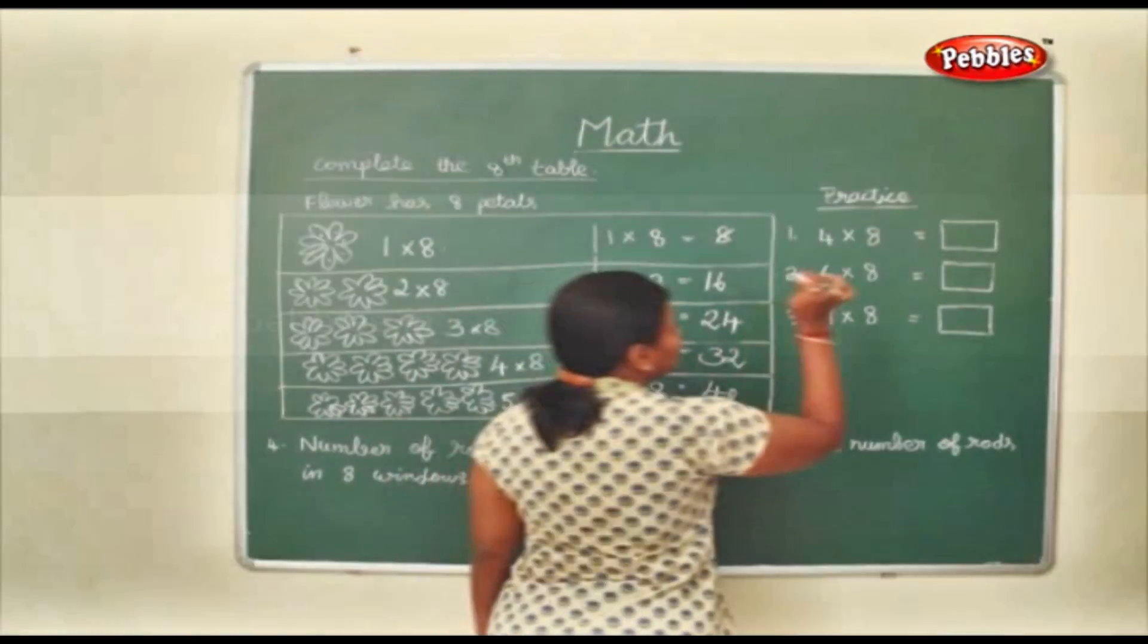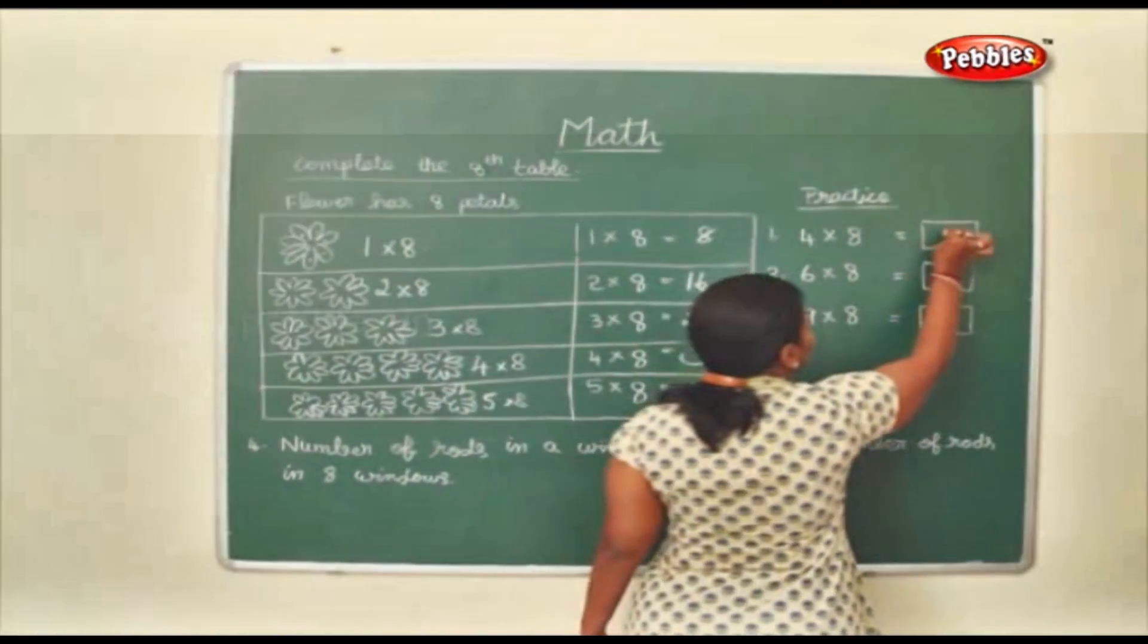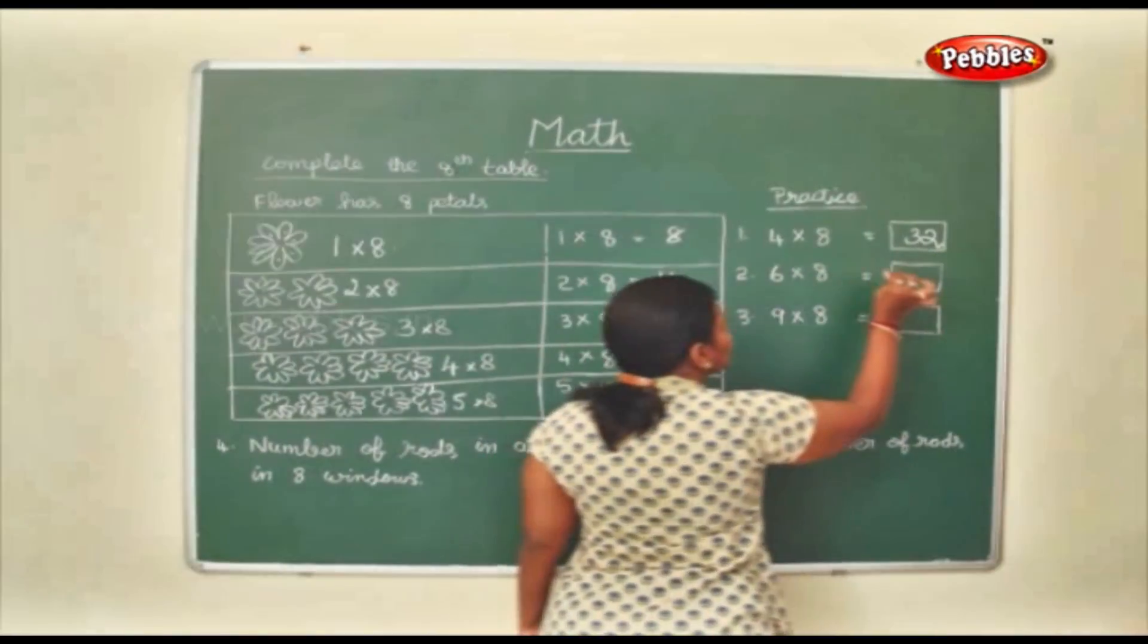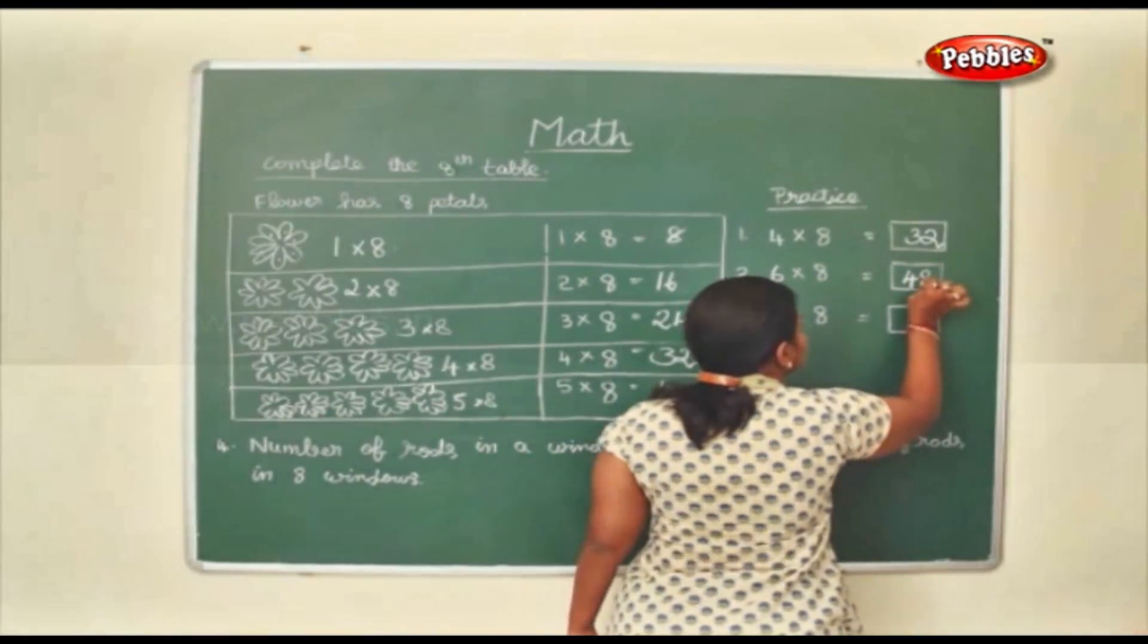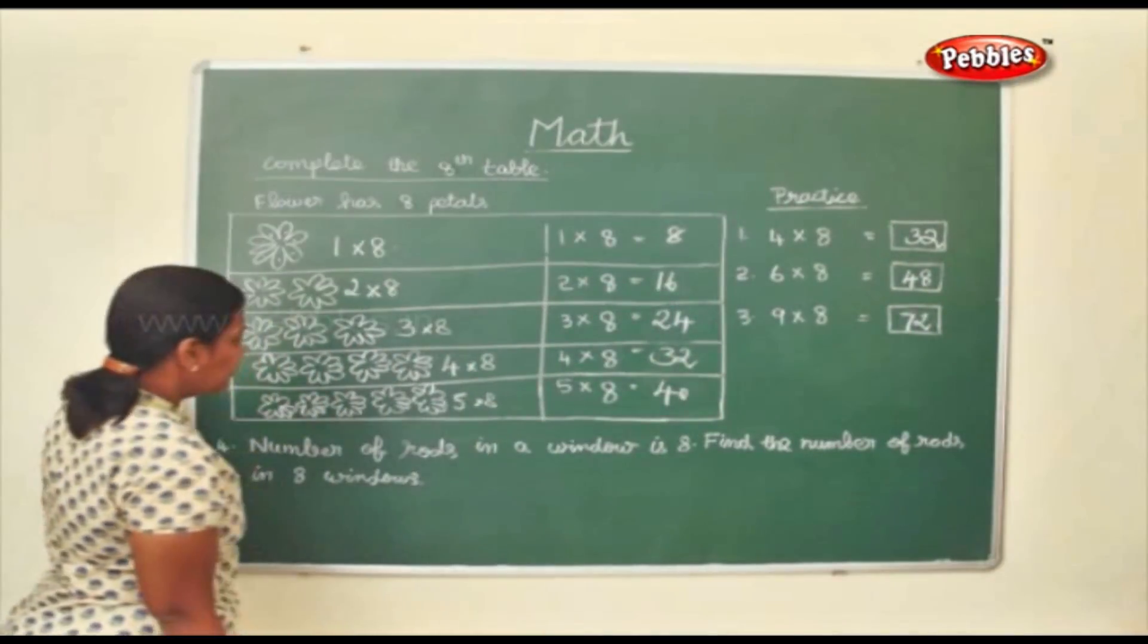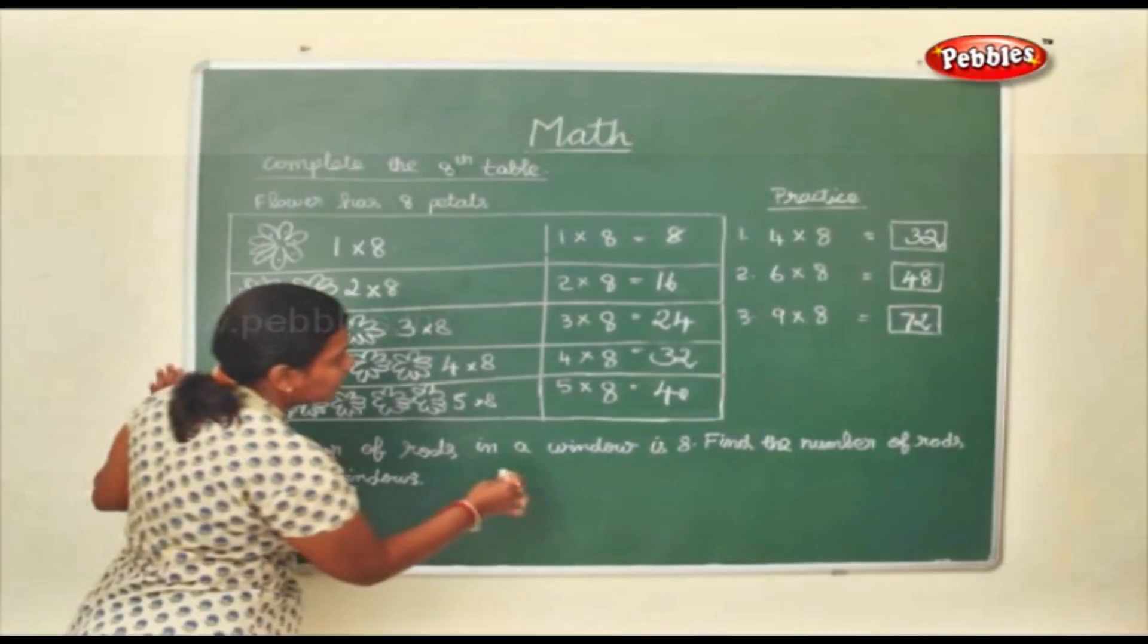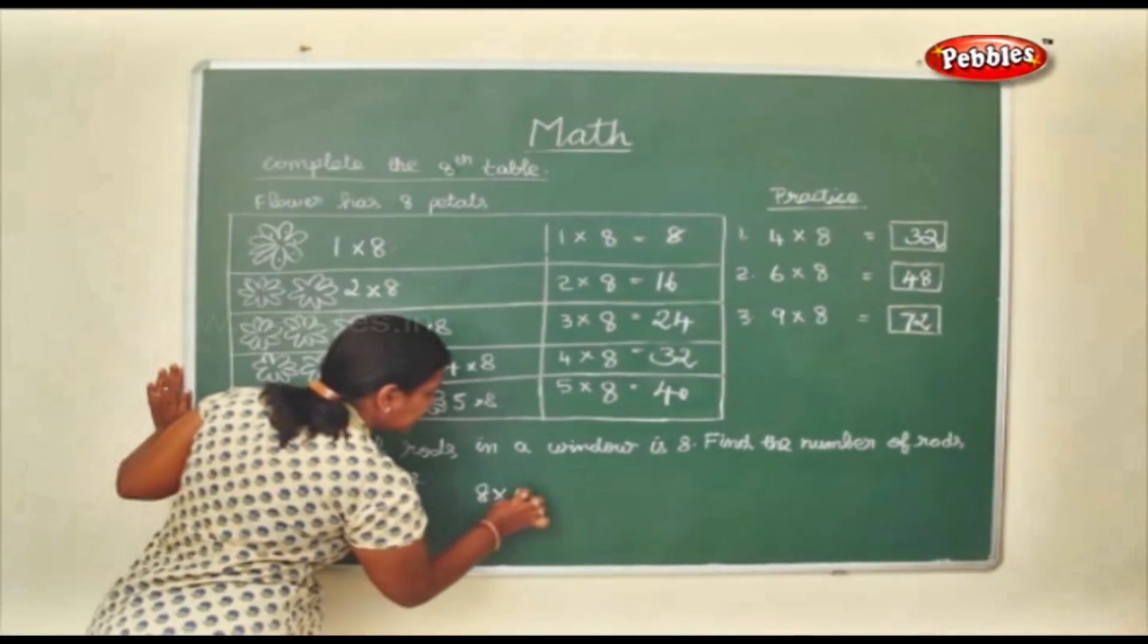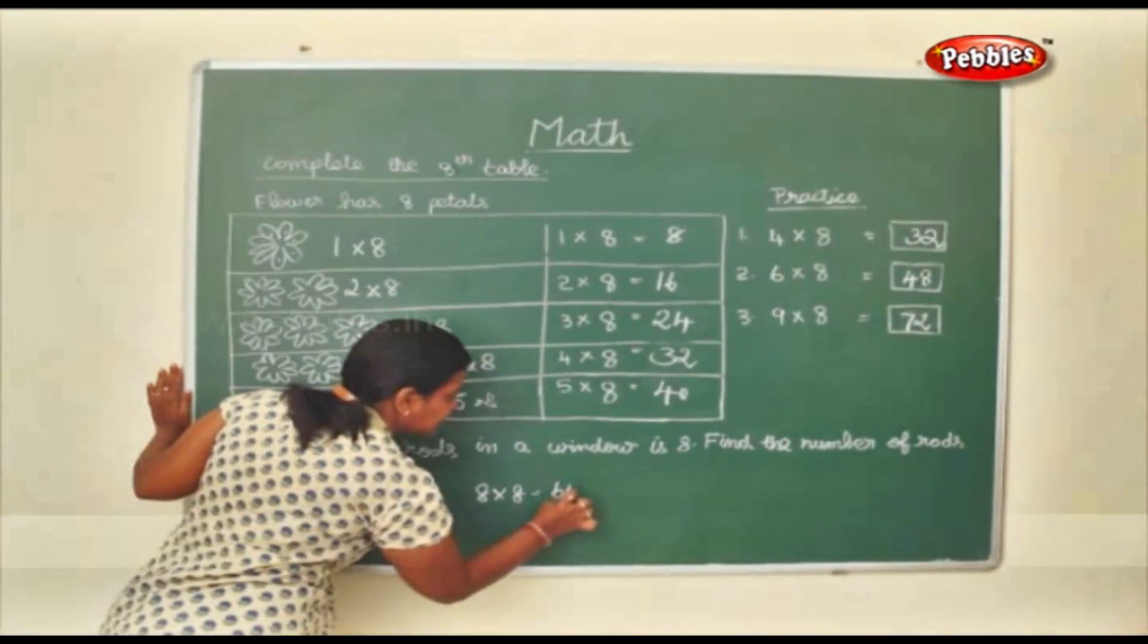Now we shall practice some sums. 4 into 8 is 32. 6 8 is 48. 9 8 is 72. Number of rods in a window is 8. Find the number of rods in 8 such windows. 8 8's are 64.